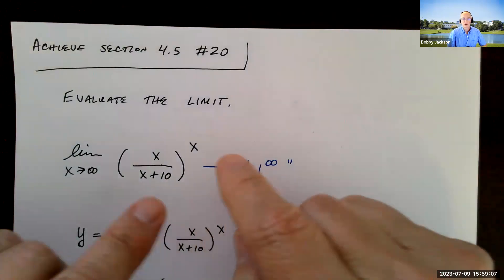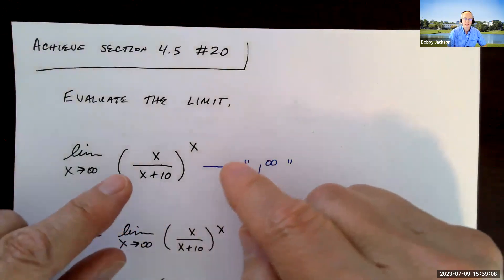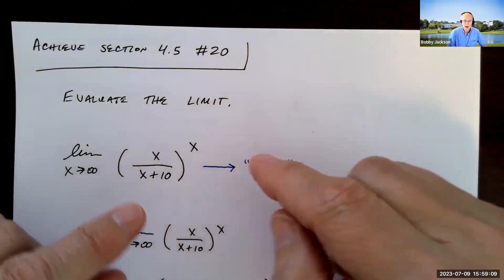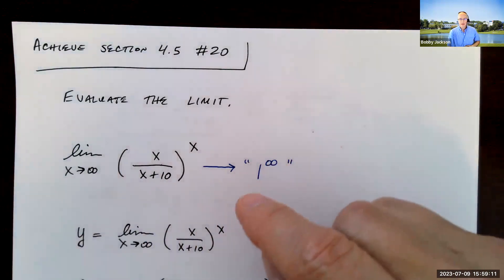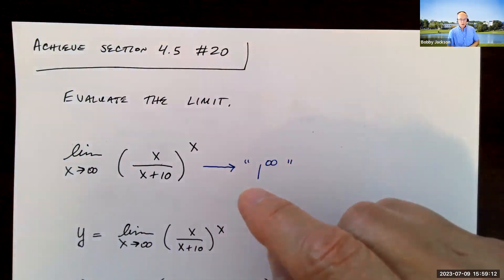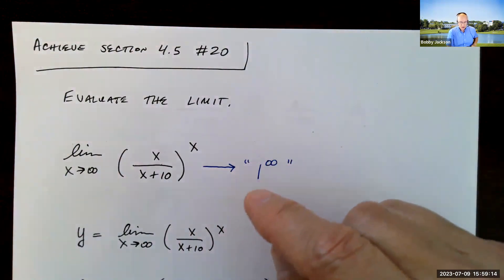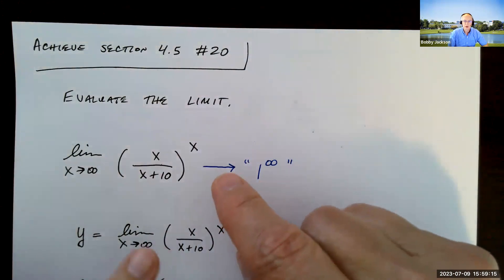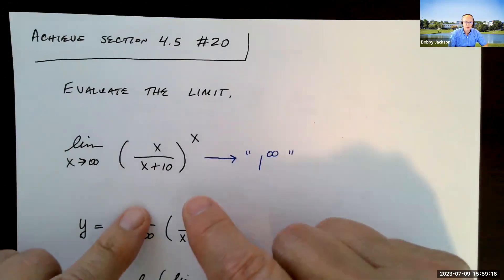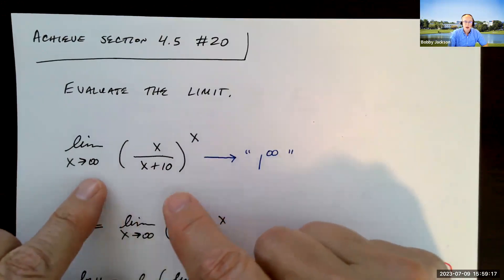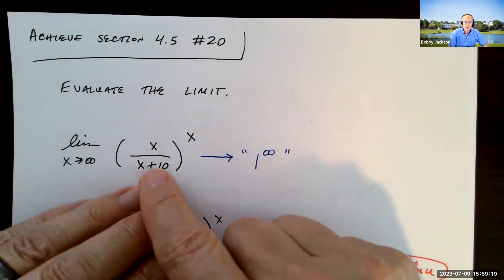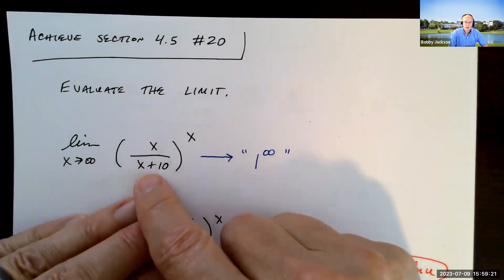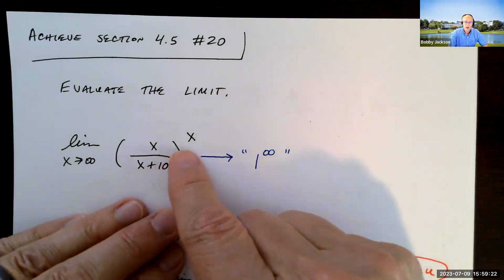Hey everyone, we're going to look at number 20 in section 4.5. It's a lengthy problem to explain, but let's see if we can tackle it. We're going to evaluate the limit as x goes to infinity of x divided by x plus 10, all raised to the x power.